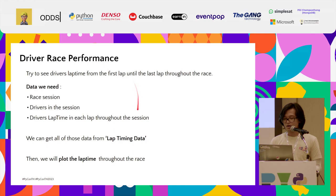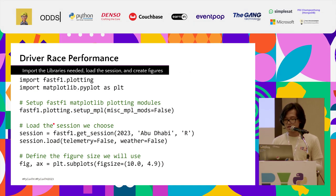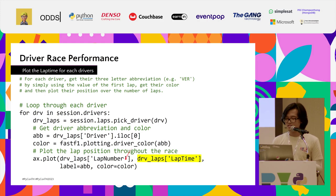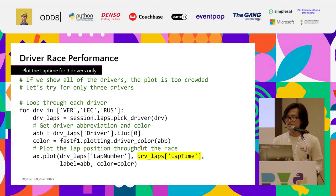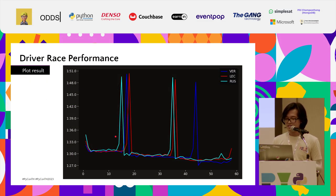Another example is driver race performance. We still use the same lap timing data, but now we want to see how fast each driver is for each lap. We use the same libraries and the same race — Abu Dhabi 2023 — but this time we use lap time instead of position. When we re-plot with all 20 drivers it's kind of messy, so let's just look at the top three drivers: Verstappen, Leclerc, and Russell.